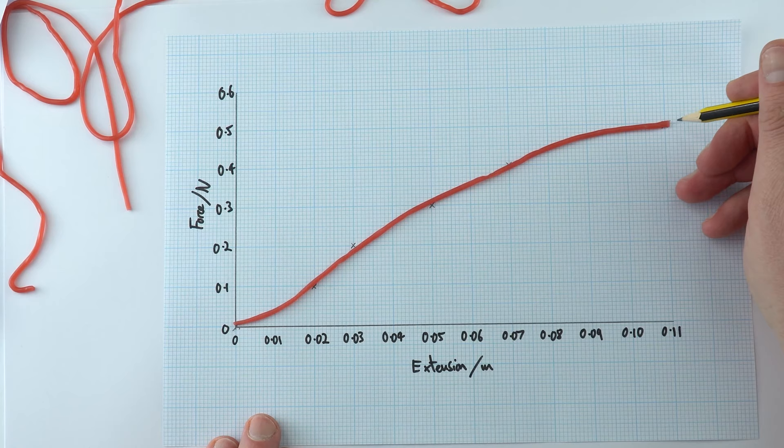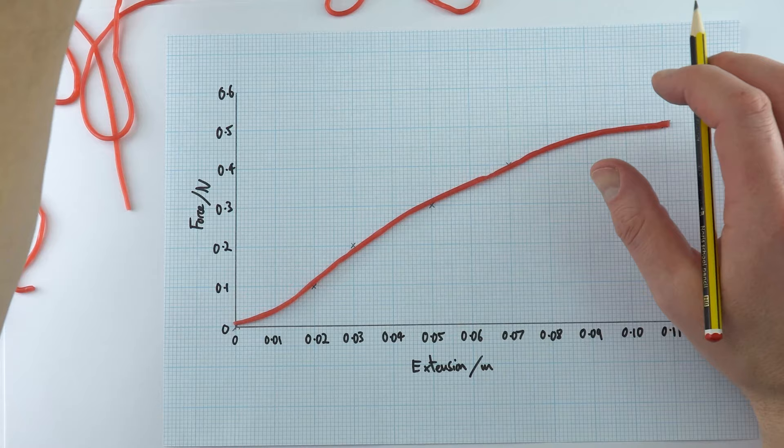And this just shows how the behaviour of a strawberry lace is very different to the linear behaviour that we get with a metal spring.